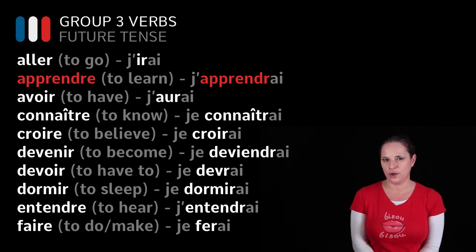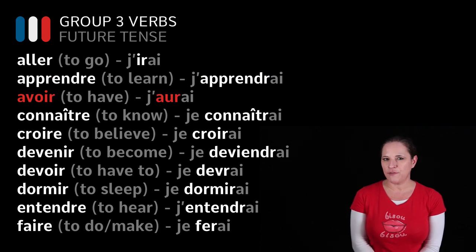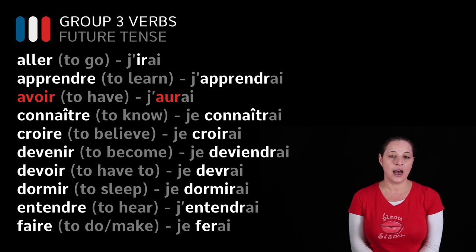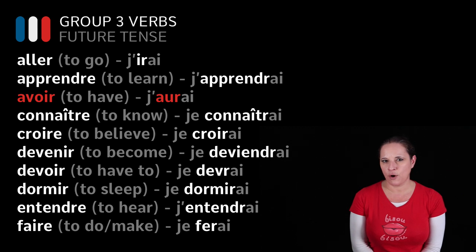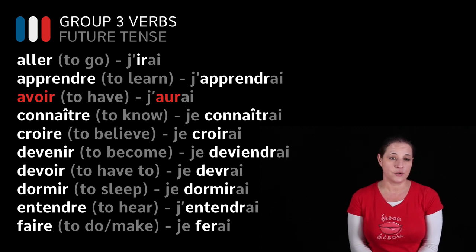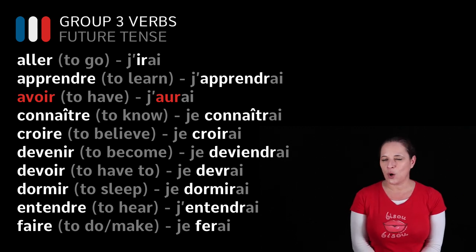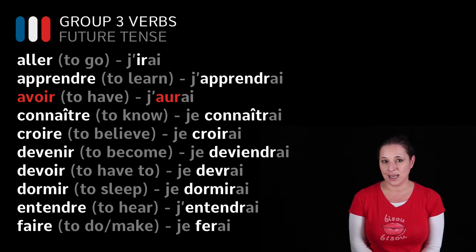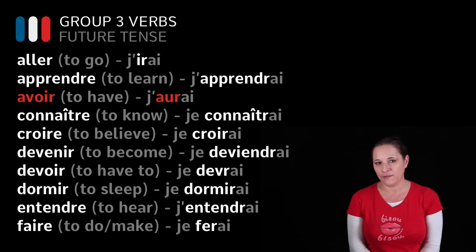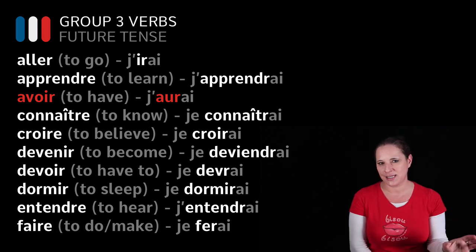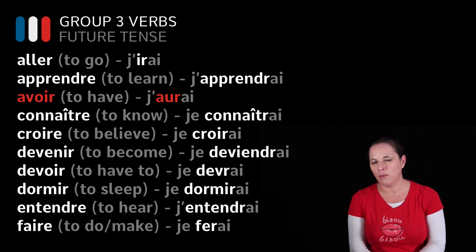APPRENDRE, to learn — J'APPRENDRAI, I will learn. AVOIR, to have — J'AURAI, I will have. By the way, I'm only conjugating these verbs in the first person, JE, because TU, IL, ELLE, NOUS, VOUS, ILS, ELLES all use exactly the same stem. So if you wanted to say 'we will have,' you use AUR as your stem: NOUS AURONS, and so on. Once you know the stem of these highly irregular verbs, you should be fine.